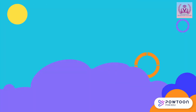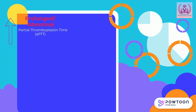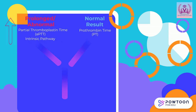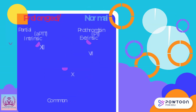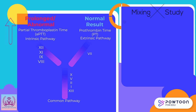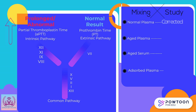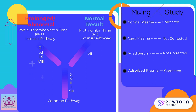For our first example: a patient has a prolonged aPTT and a normal PT. This would suggest a coagulation factor deficiency in the intrinsic pathway — specifically factors 12, 11, 9, and 8. The extrinsic and common pathways are not considered since the PT is normal. After performing the mixing study: fresh plasma corrected the abnormal aPTT, aged plasma did not correct, aged serum did not correct, and adsorbed plasma corrected.